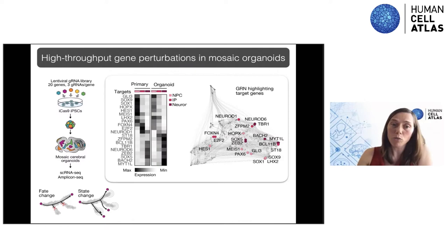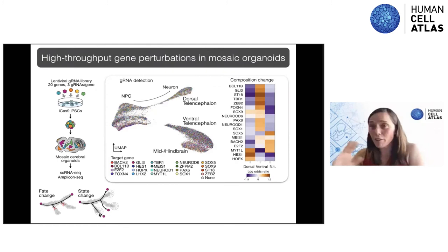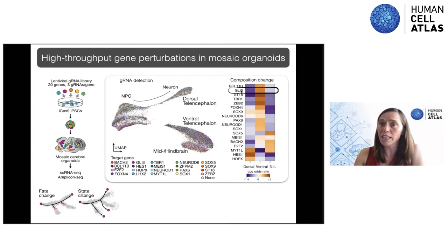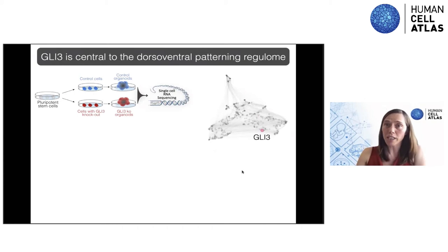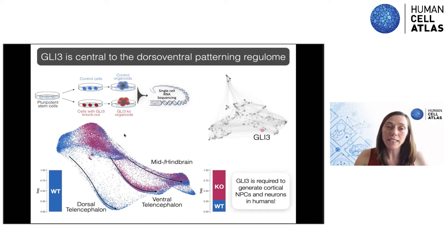We see a lot of guides in all these cells and can look at composition changes. Highlighting one gene, GLI3, which very specifically leads to enrichment of the dorsal lineage depletion and enrichment of the ventral lineage. We followed up by generating isogenic knockout lines for GLI3 and control lines, grew organoids, and performed single-cell transcriptomics at two months. We found that a knockout of GLI3 leads to a full lack of the cortex, confirming the finding from the multiplex experiment.